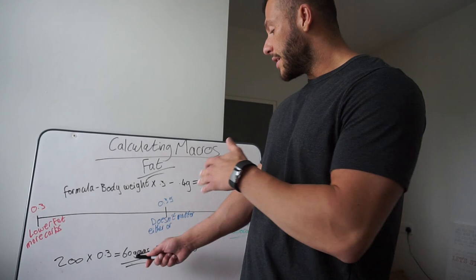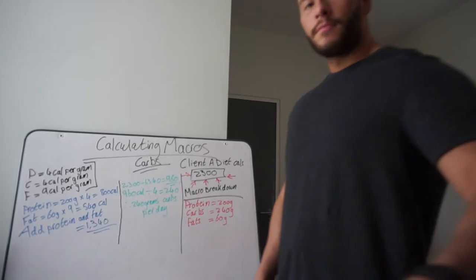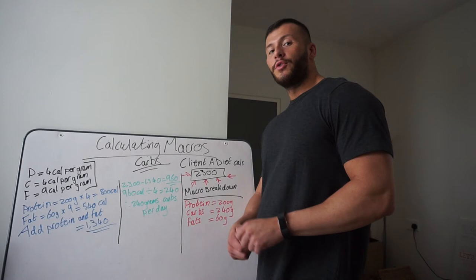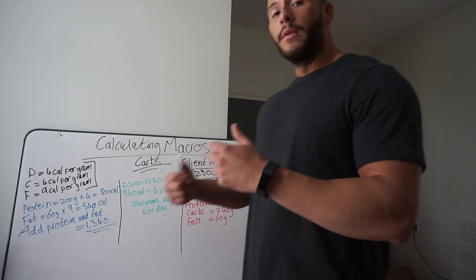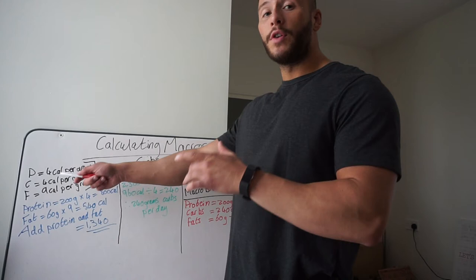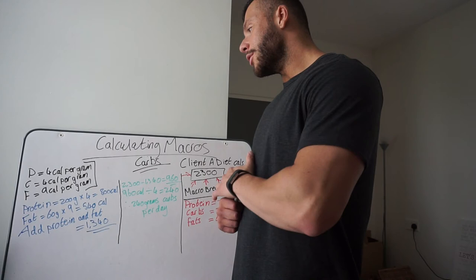Okay, so moving on to how to calculate our macros for our carbs. Now remember, at the start of the video we worked out our Client A's dieting calories, which were 2300 calories. If you remember from last week's video, there was four calories per gram of protein, four calories per gram of carbs, and nine calories per gram of fat. So let's get started.